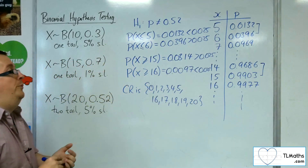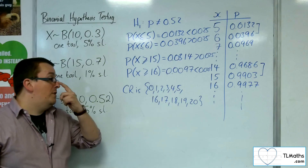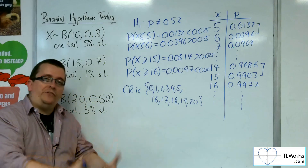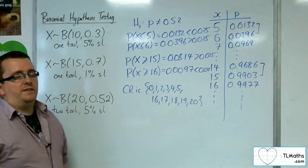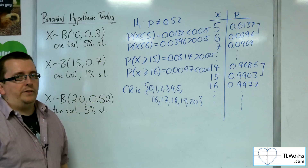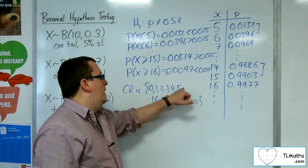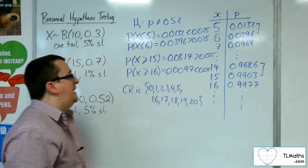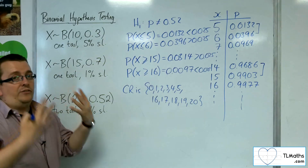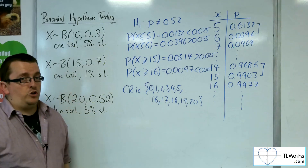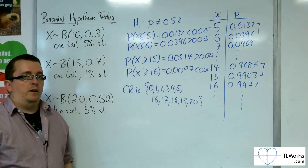So the critical region is {0, 1, 2, 3, 4, 5} and {16, 17, 18, 19, 20}. Observing any of those gives a significant result and evidence to reject the null hypothesis. Observing anywhere between 6 and 15 inclusive puts you in the acceptance region, and you would fail to reject the null hypothesis.